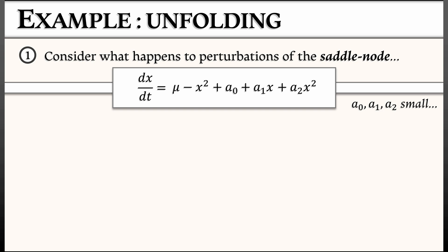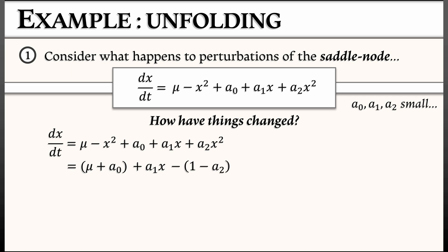Well, I'm going to take that right-hand side and I'm going to sort it out in terms of lowest order terms in the Taylor expansion about zero. So my zeroth order terms in x are μ + a₀. My first order term is a₁x. And my second order term is minus quantity (1 - a₂)x².